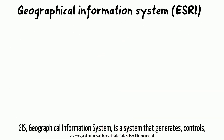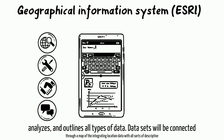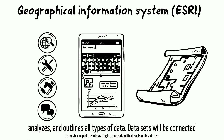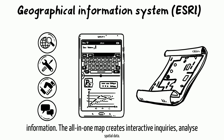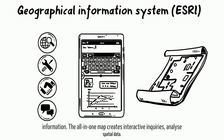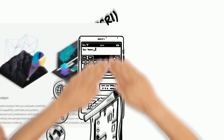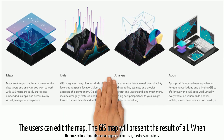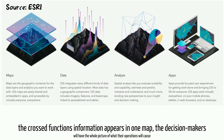GIS is a system that generates, controls, analyzes, and outlines all types of data. Data sets will be connected through a map, integrating location data with all sorts of descriptive information. The all-in-one map creates interactive inquiries and analyzes spatial data. The users can edit the map, and the GIS map will present the result of all.